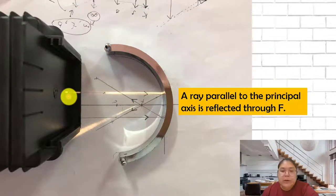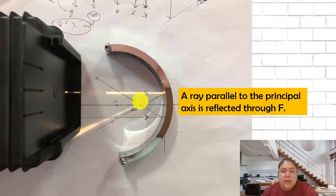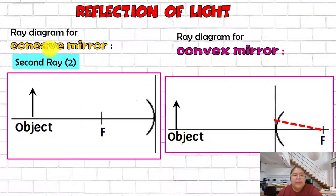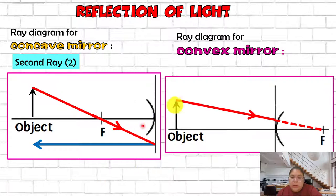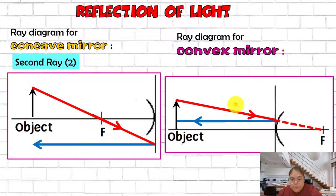An experiment confirms that parallel light hitting the concave mirror reflects to the focal point. For the second ray, it is the reverse of the first ray. For concave: go to F first, then reflect parallel. For the convex mirror: the ray goes toward the behind F using a dotted line, then after hitting the mirror it reflects parallel. This is the second ray for both mirrors.